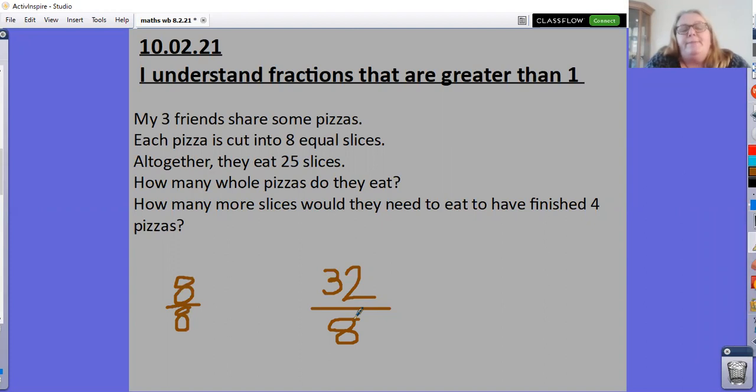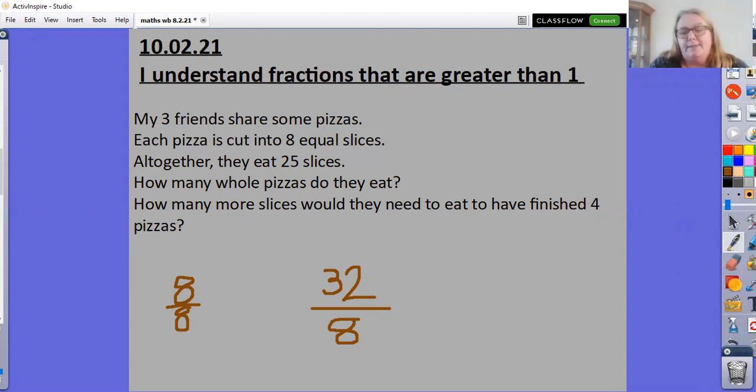So if they've eaten 25 slices, how many slices would they need to eat to finish off all four pizzas? Well that needs to go from 25 to 32. So we can count from 25 to 32, and we should end up with seven. So they need to eat seven more pieces of pizza and they will have eaten all of the pizza slices.